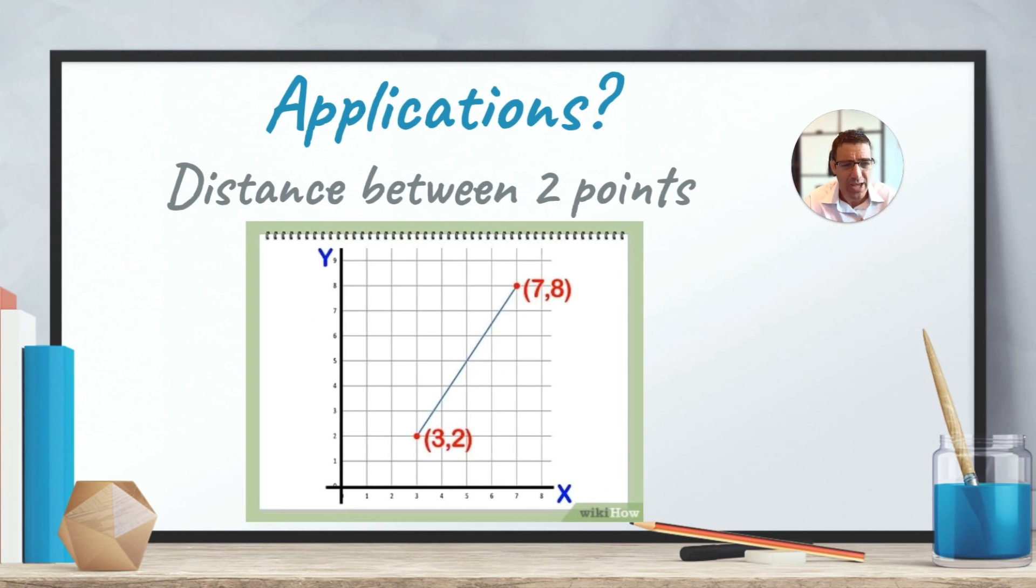So what applications do we have for Pythagoras' theorem? Well, imagine that you have two points here, the point 3 across and 2 up and the point 7 across and 8 up. And you'd like to find the distance between these two points. Well, it's not obvious how to do this. But luckily, using Pythagoras' theorem and drawing a triangle, we might just be able to get away with this one and solve it.